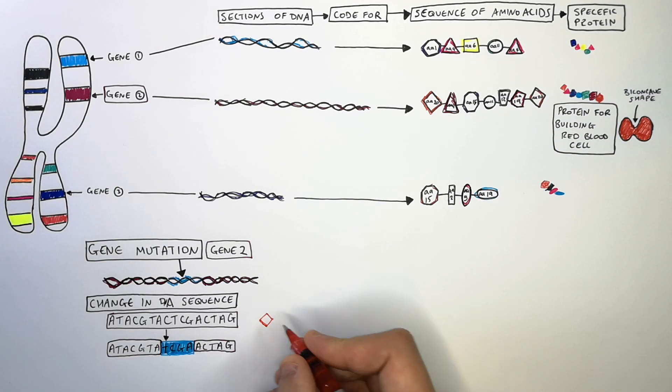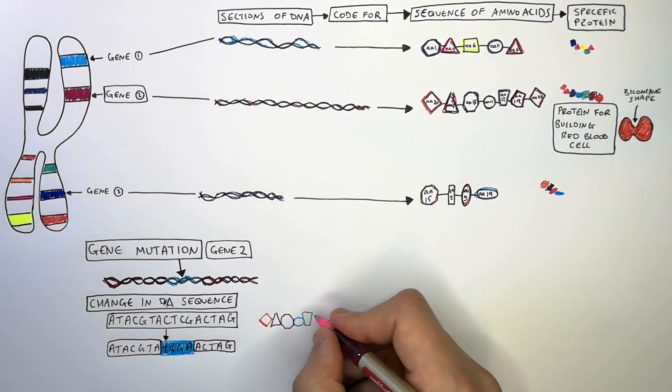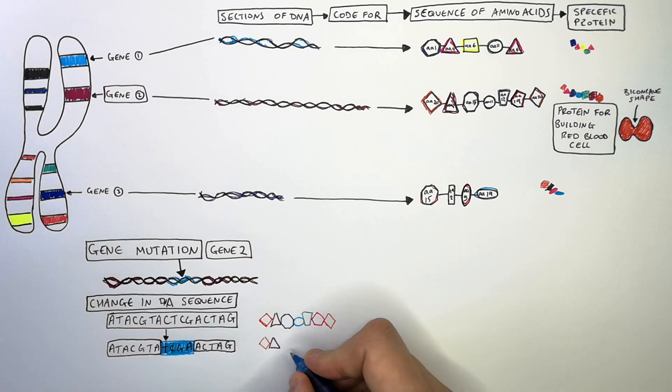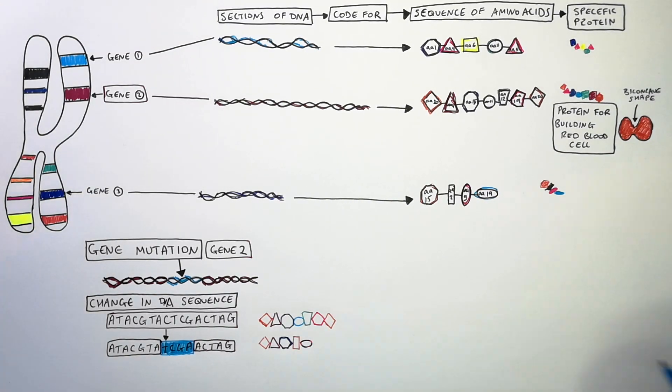I'm now drawing the amino acid sequence for the non-mutated DNA sequence. And because the DNA mutated, which means that the DNA sequence changed, this will lead to a different sequence of amino acids.